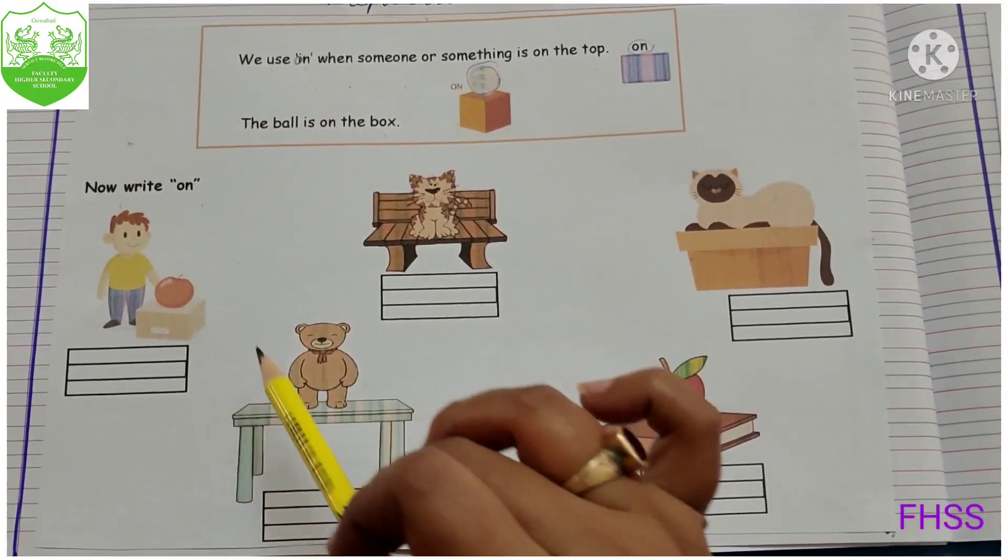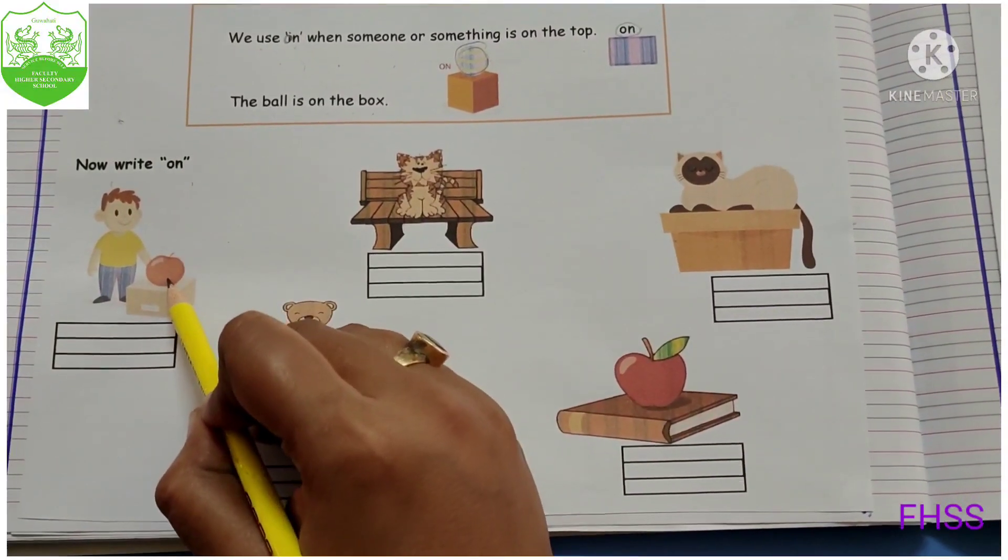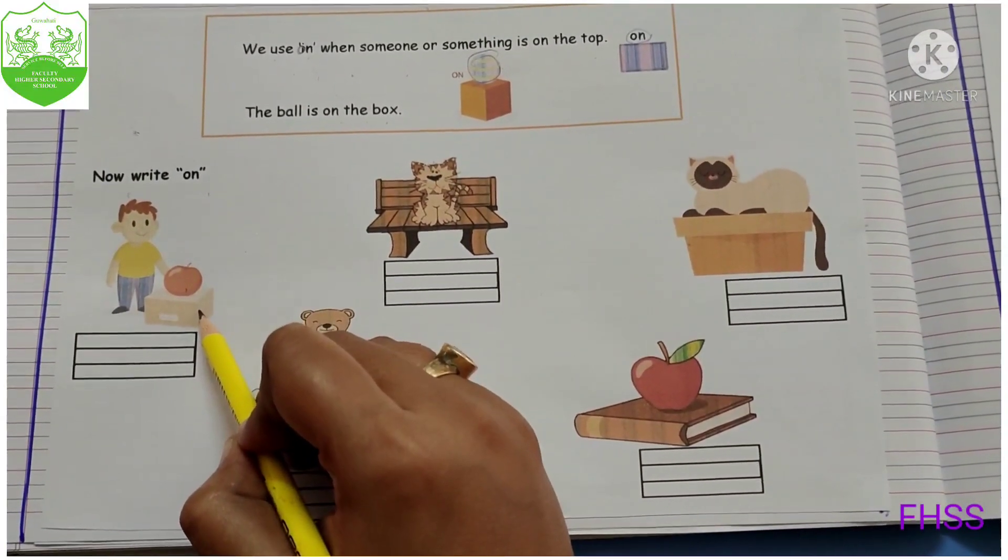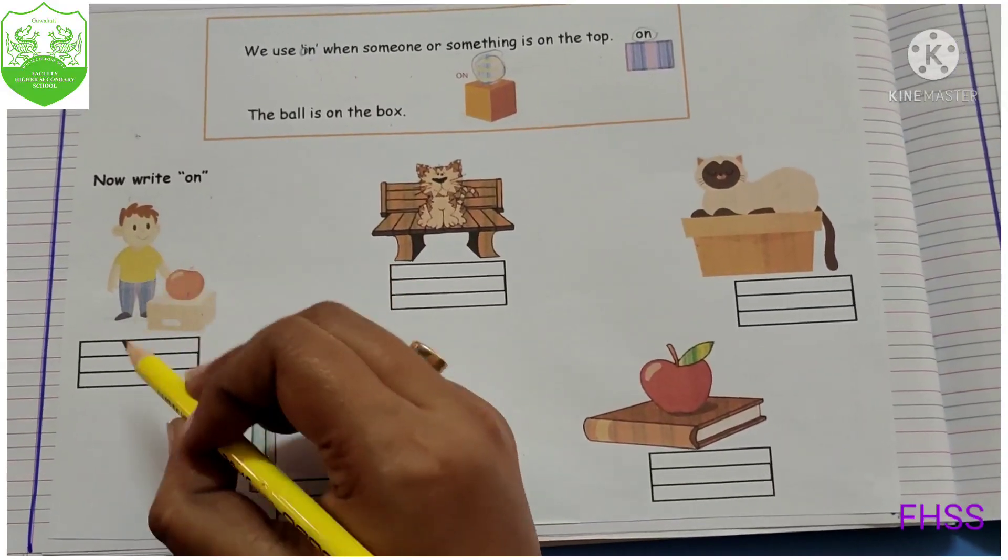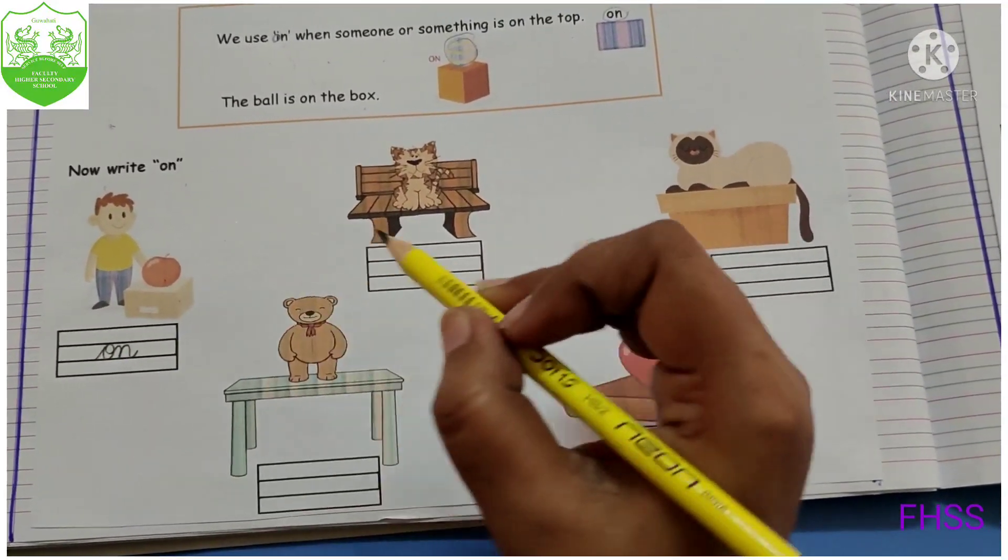Now write on. So in each blank we have to write on. So now look at the apple. Where it is? It is on the box, on the top of the box. So we will write here O-N.